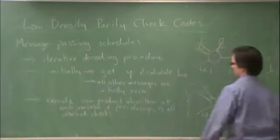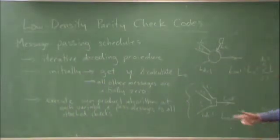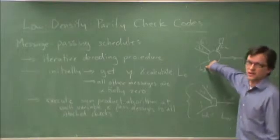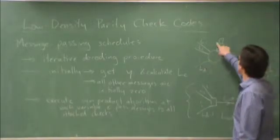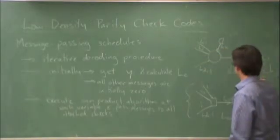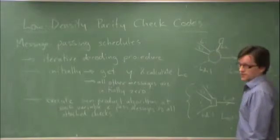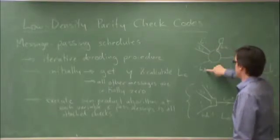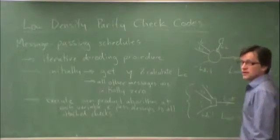What that will mean in practice, the initial messages, since the initial messages are all zero coming in from the rest of the graph, and the rule is take the sum, the first message you pass here will just be LC. And these are all zero. So zero plus LC is LC.